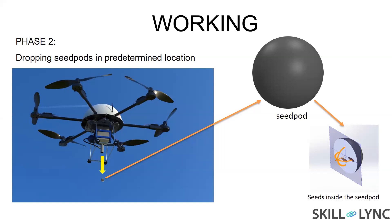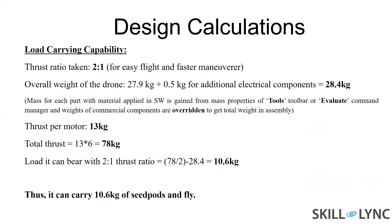The seed will germinate when it enters the ground and gets moisture along with the nutrients already included in the pod. For design calculations I used a 2:1 thrust ratio, because along with carrying weight it has to move upward effectively. This hexacopter typically flies about two to three meters above the ground so that the seed pod can penetrate the soil well enough.